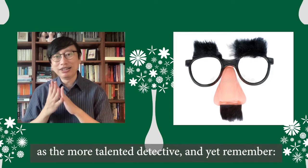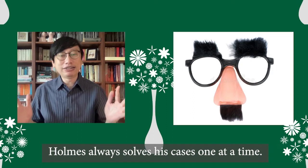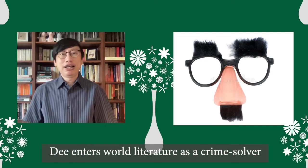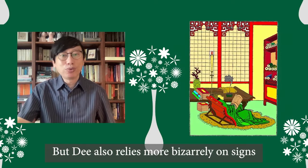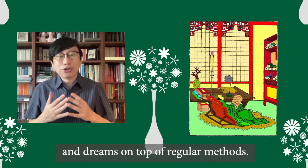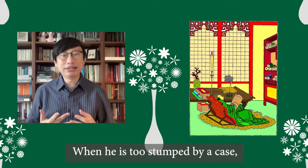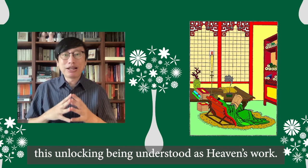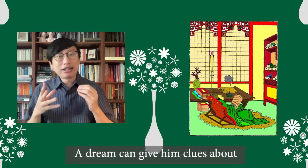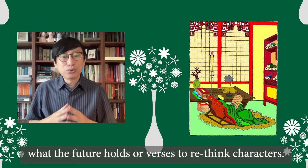All this may make us regard Holmes as the more talented detective, and yet remember, Holmes always solves his cases one at a time. Dee enters world literature as a crime solver who can somehow solve three mysteries simultaneously and correctly. But Dee also relies more bizarrely on dreams on top of regular matters. When he is too stumped by a case, he turns to sleep in order to let information unlock hidden connections in his head, this unlocking being understood as heaven's work. A dream can give him clues about what the future holds, or verses to rethink characters.